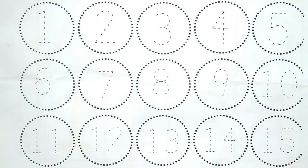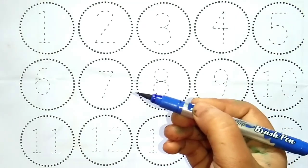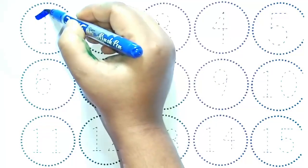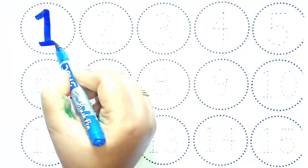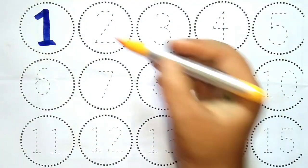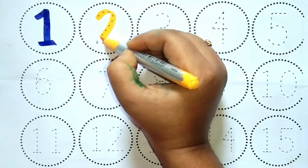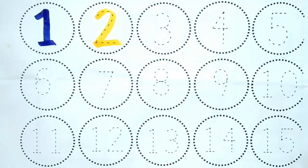Hello, let's start. Blue color, 1, this is number 1. Yellow color, 2, this is number 2.